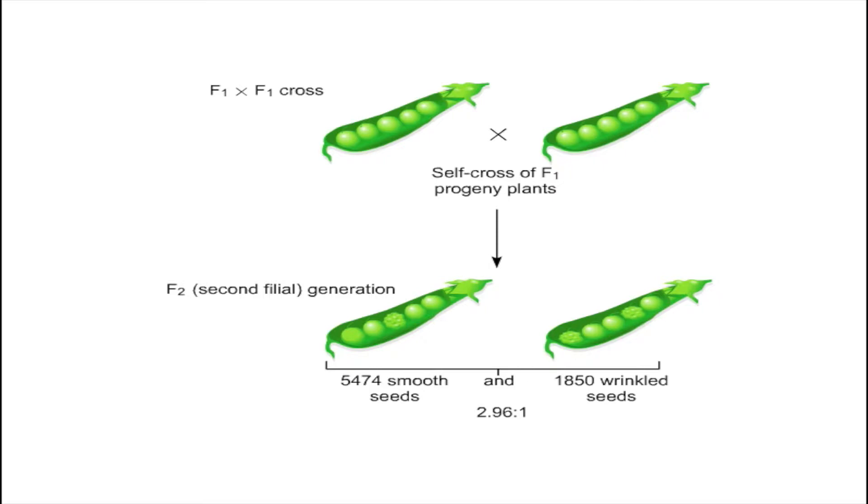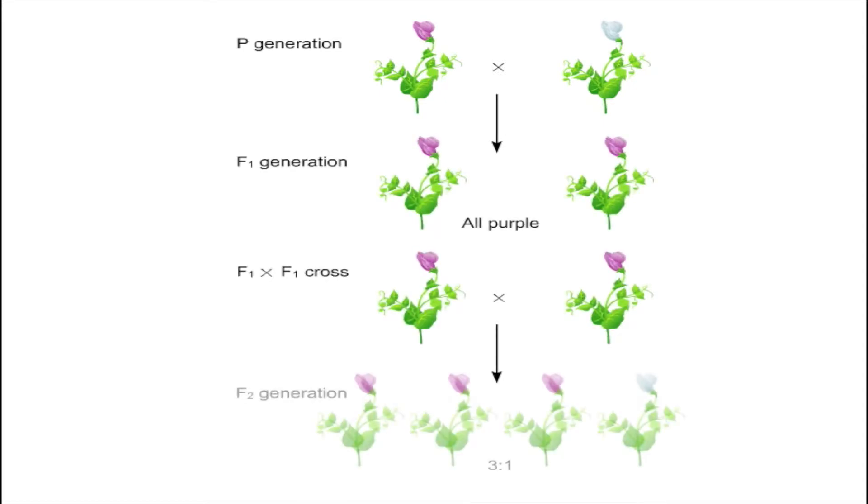That is, the traits are either smooth or wrinkled seeds and nothing in between. Mendel noticed that this result occurred in many other monohybrid crosses, such as flower color. He then used his knowledge of math and statistics to propose a theory.